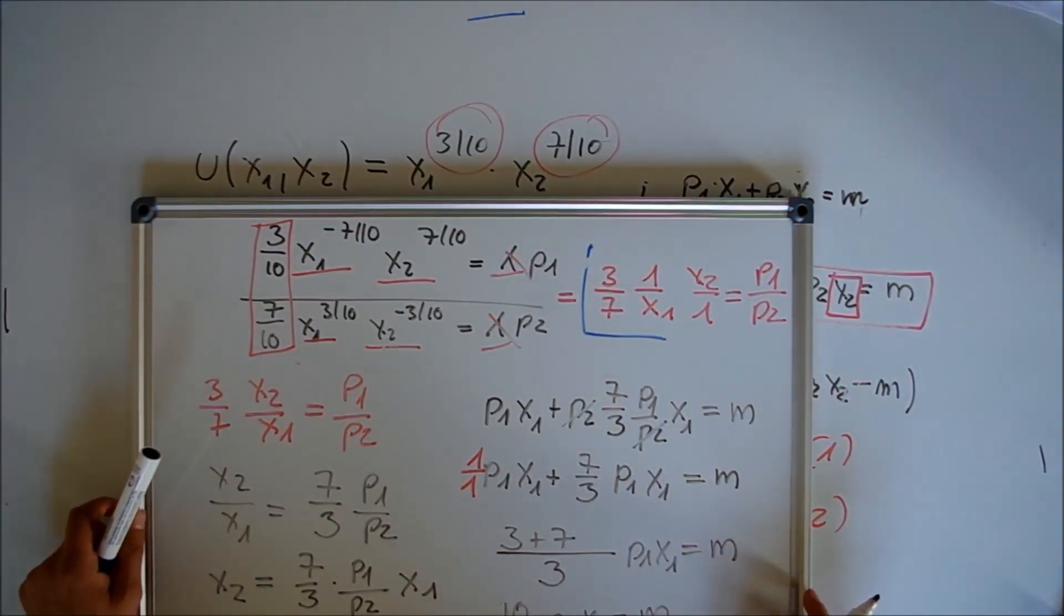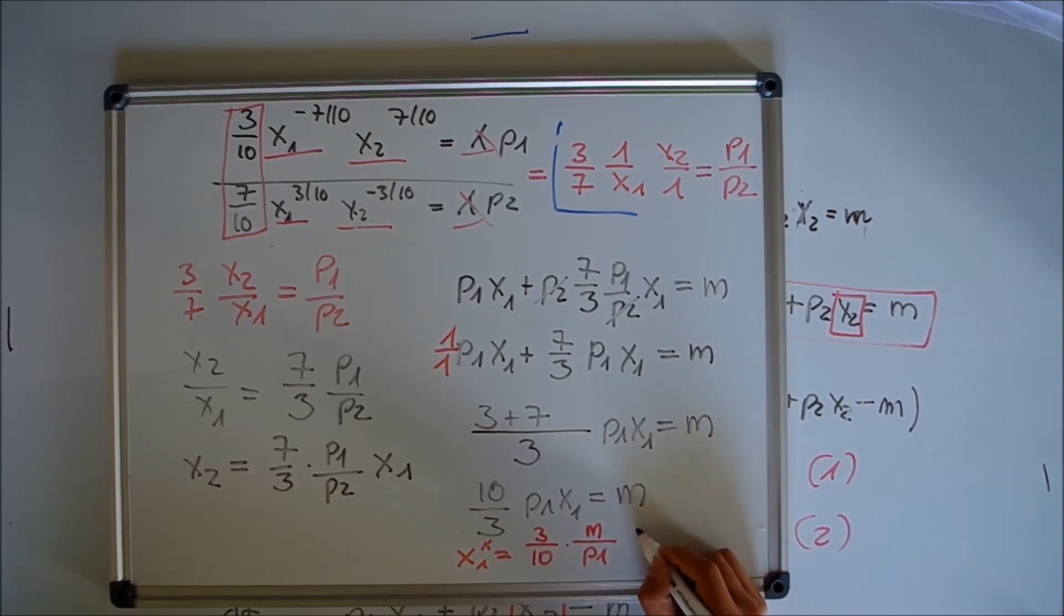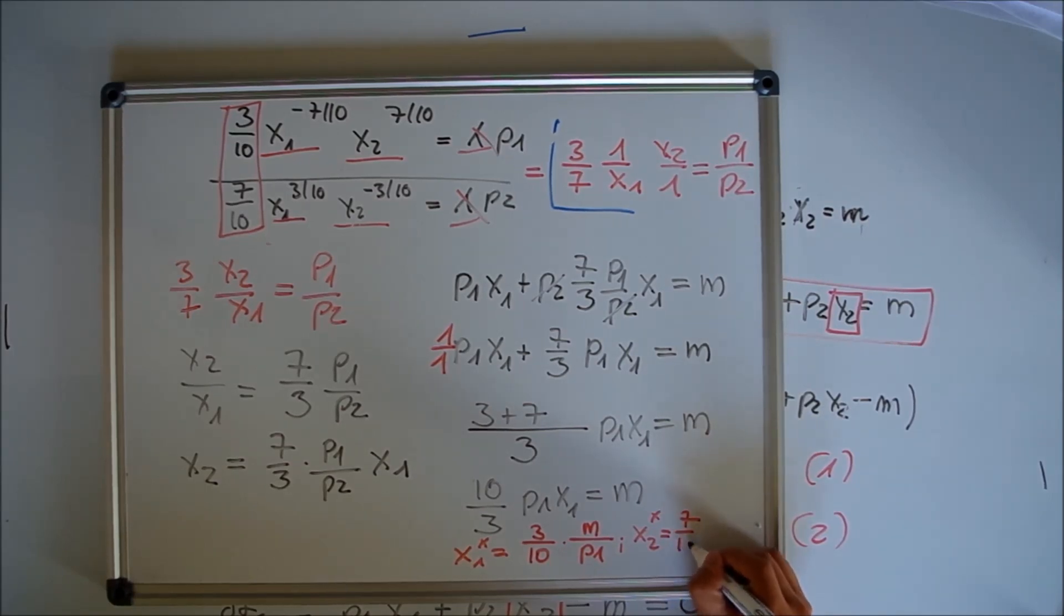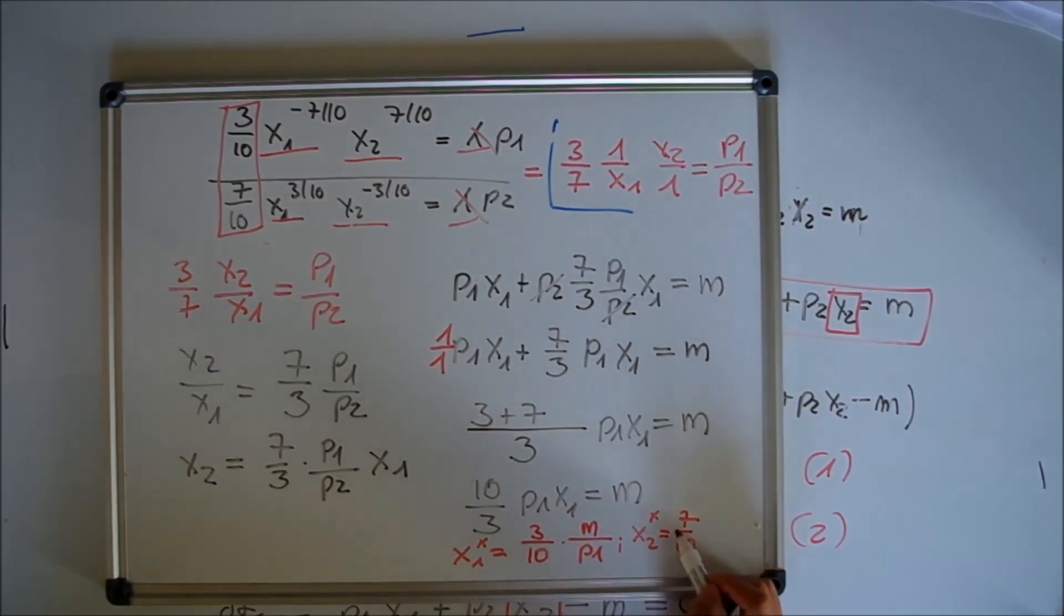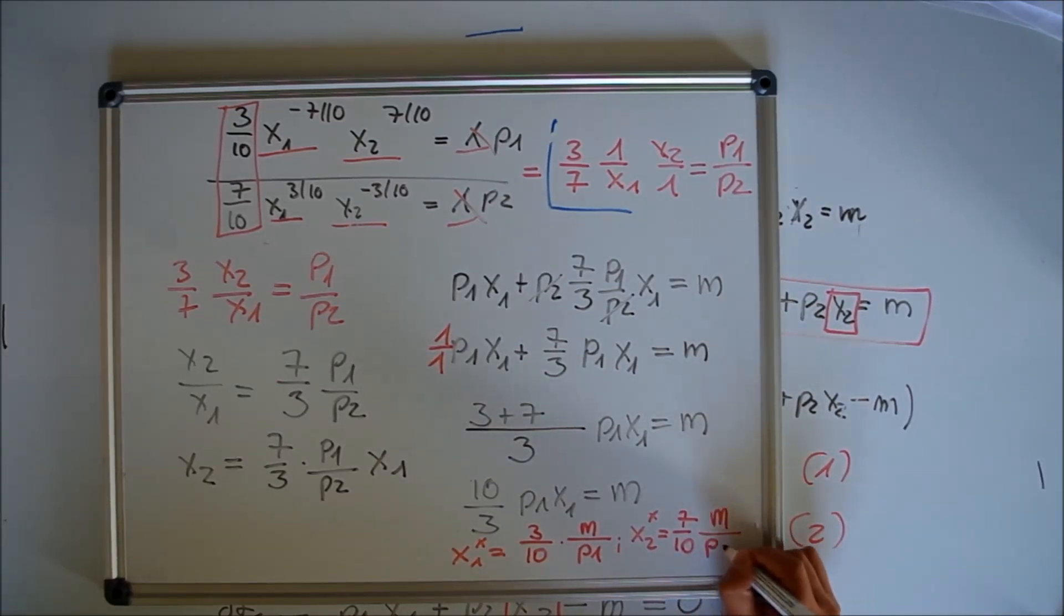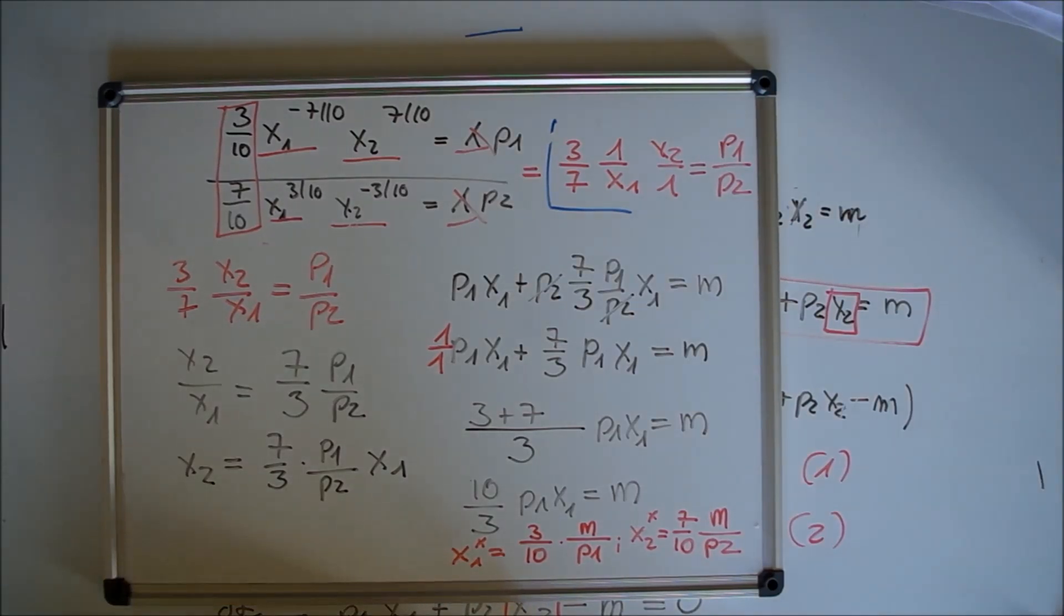This means you can easily find the solution for x2*. x2* = (7/10)*(M/p2), because 3/10 + 7/10 = 1. This is the optimal consume bundle for Emma.